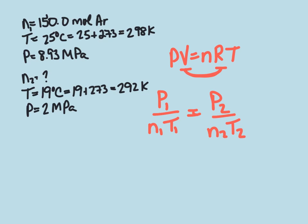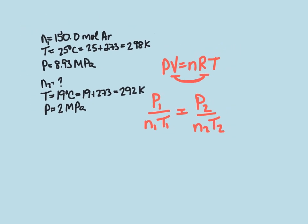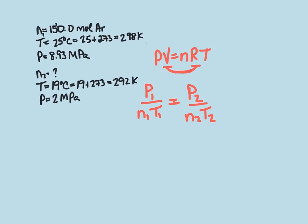So when we plug in our values, our initial pressure is 8.93 megapascals, we have 150 moles, and we have a temperature of 298 Kelvin.